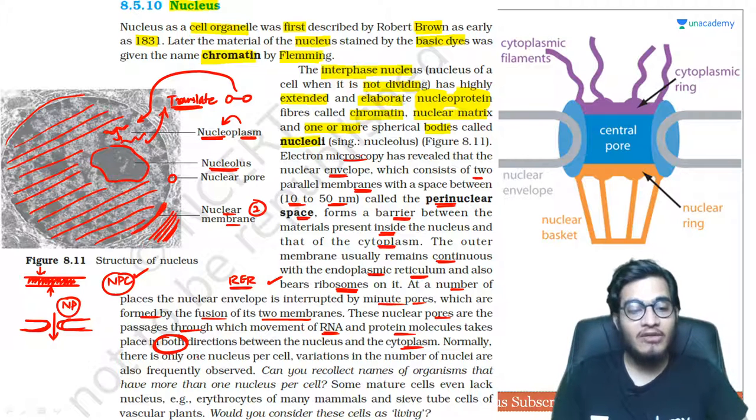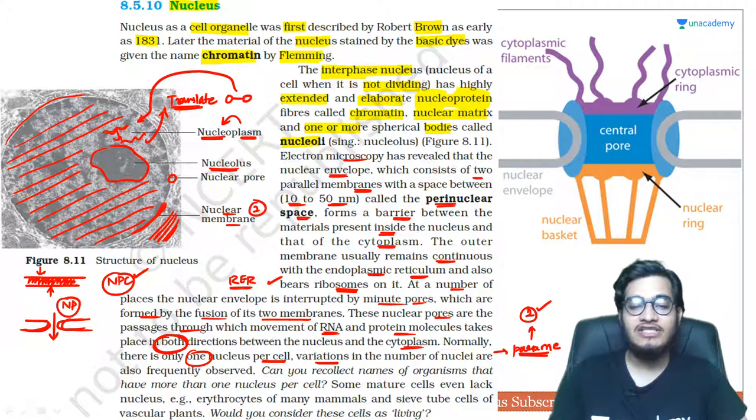Normally one cell has only one nucleus present, but variations are also seen. Like if you see the structure of Paramecium, it has mega and micro nucleus present, meaning you'll see two nuclei.